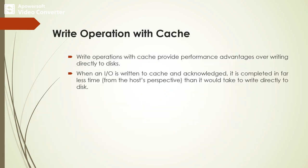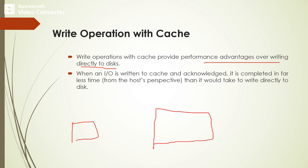Next we will look at write operations. Write operations with cache provide performance advantages over writing directly to the disk. The size of the cache is small compared to the main memory. When an IO is written to cache and acknowledged, it is completed in far less time from the host's perspective than it would take to write directly to the disk.